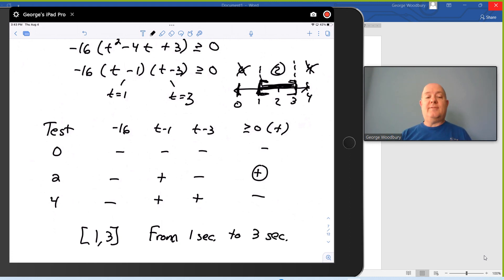If we had divided through by negative 16, this column would have been gone. But this sign would have been less than or equal to 0. And if we multiplied just the two factors, all those signs would have switched. It would have been positive, negative, positive. We would have been looking for negative. It still would have been the middle interval.